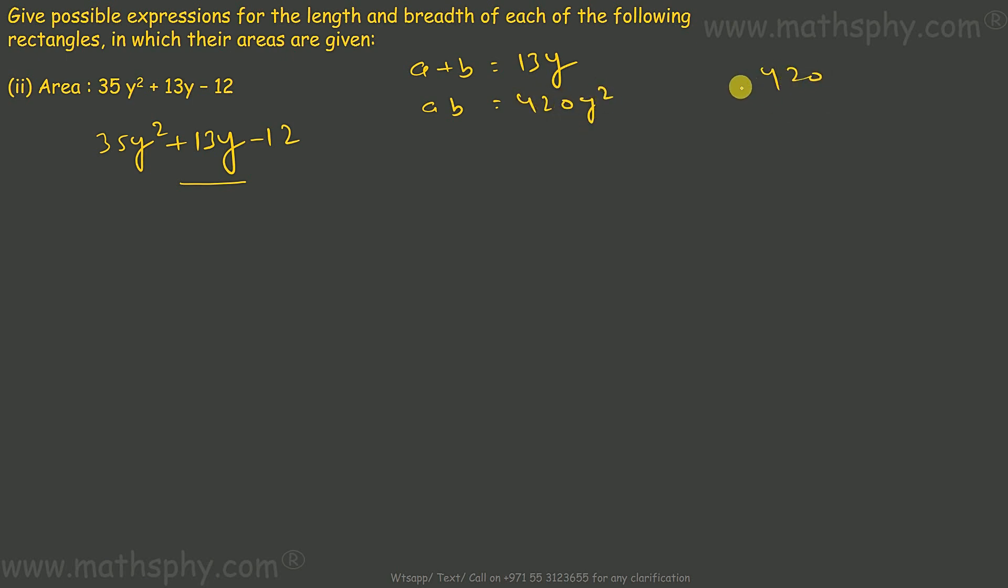So let's break 420 or factorize it. This comes to, I can write this as 7 into 2 into 2 into 5 into 3. So this will be 28, 7 into 2 into 2, and it will be 15. 28 into 15 gives you 420, and 28 minus 15 gives you 13.